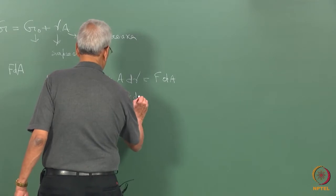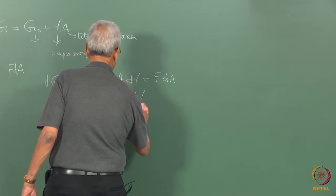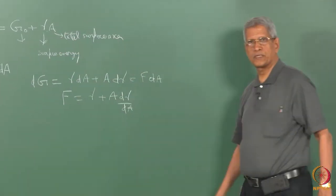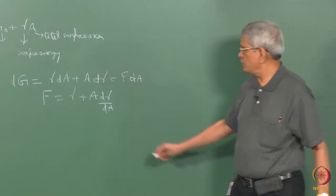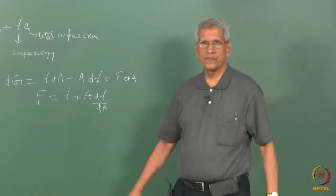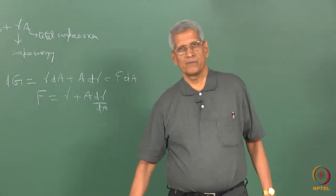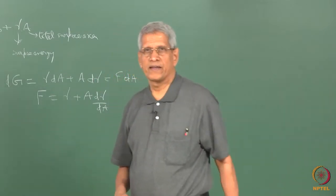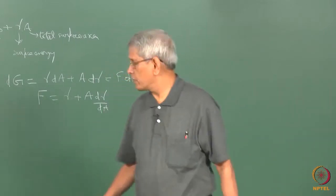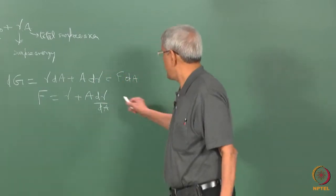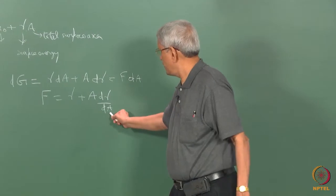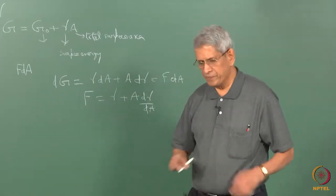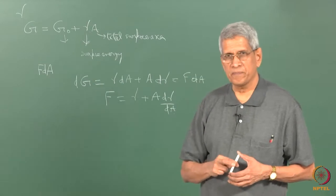From the energy balance, we can write F = gamma + A × (d(gamma)/dA). This is the force expression: gamma is the surface energy and A × (d(gamma)/dA) is the rate at which surface energy changes multiplied by the area, showing how force varies.